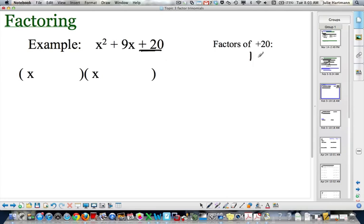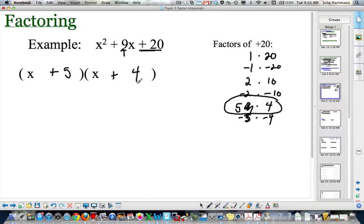So, the multiples, you can have 1 times 20. Now, realize, sometimes there's going to be negatives in there. So you could also have negative 1 times negative 20. You could have 2 times 10, or negative 2 times negative 10. 4 times 5, or negative 5 times negative 4. What adds to give us 9? 9, yeah, 5 and 4, and that'd be a plus 5 and a plus 4. So, plus 5, plus 4,